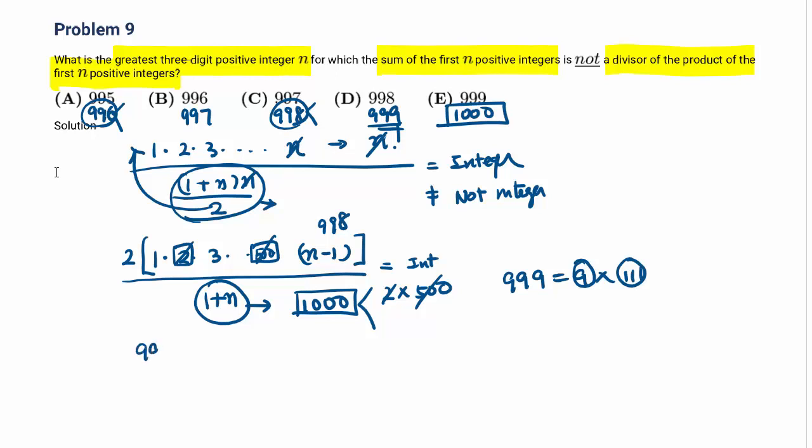Only 997. 997 is a prime number. If this is 997, this one is 995. There is no way to cancel out this number because 997 is prime. So this is not an integer. So this one cannot be a divisor. That is the largest number. So C is the answer.